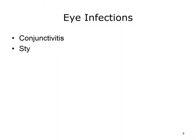Eye infections can occur in different parts of the eye and can affect just one eye or both. Two common infections are conjunctivitis and styes. Conjunctivitis is also known as pink eye. The causes of conjunctivitis include bacterial or viral infection, allergies, and substances that cause irritation such as contact lens products or eye drops. A stye is a bump on the eyelid that happens when bacteria from your skin gets into the hair follicle of an eyelash.